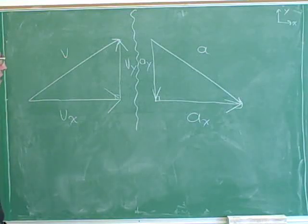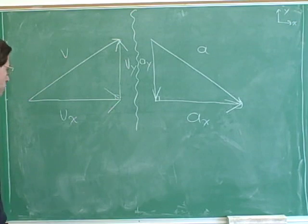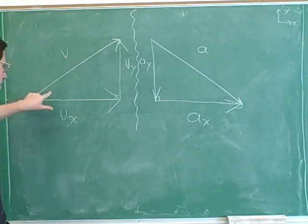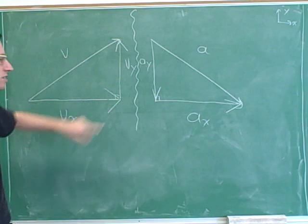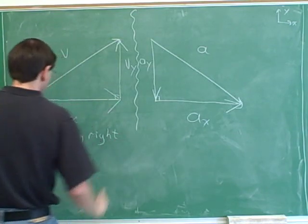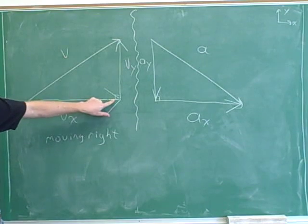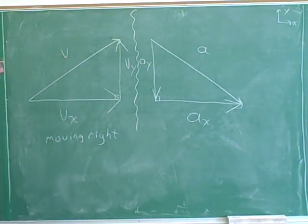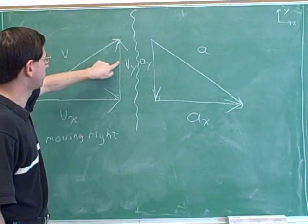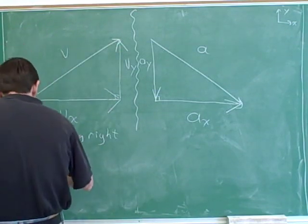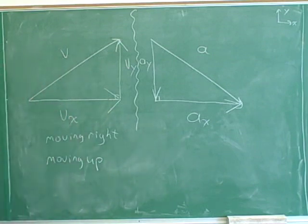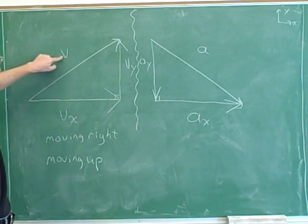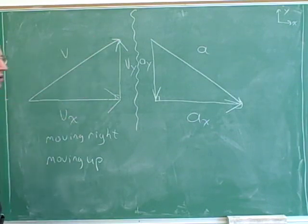Now we've broken both of these vectors into components, and we can finally try to interpret them. The velocities tell us which way we're moving. Horizontally, we can see we're moving to the right because our horizontal component was pointing to the right. And vertically, we're moving up because our vertical component is pointing up. That's the information we got from this velocity vector — it was maybe obvious from the overall vector, but it's good to see it from the components as well.